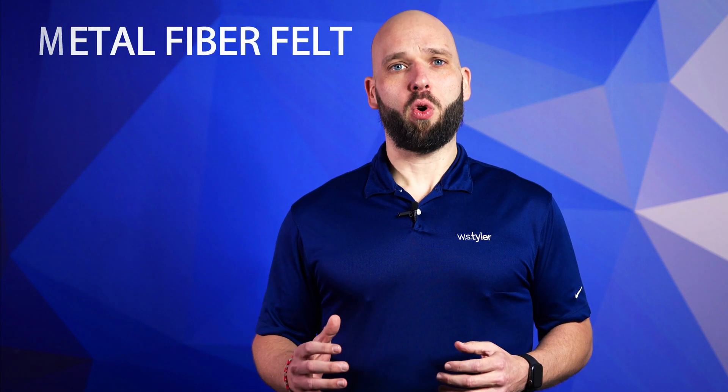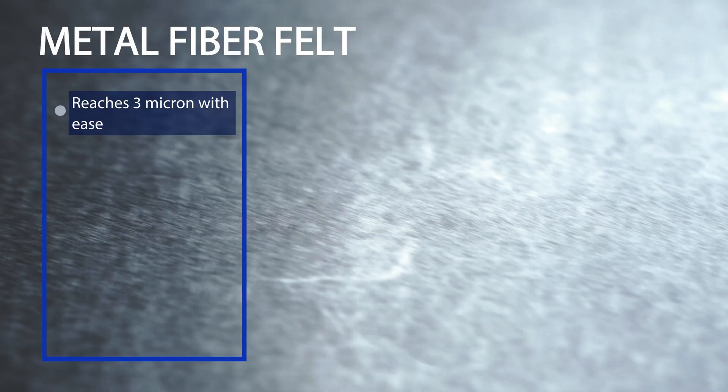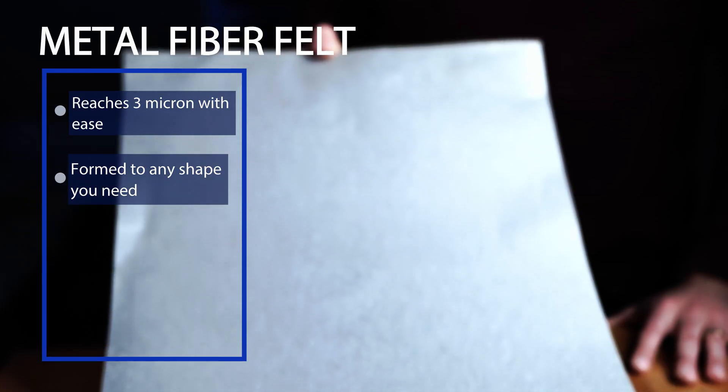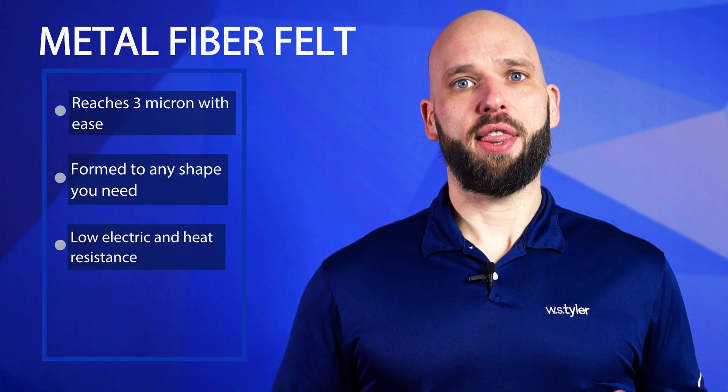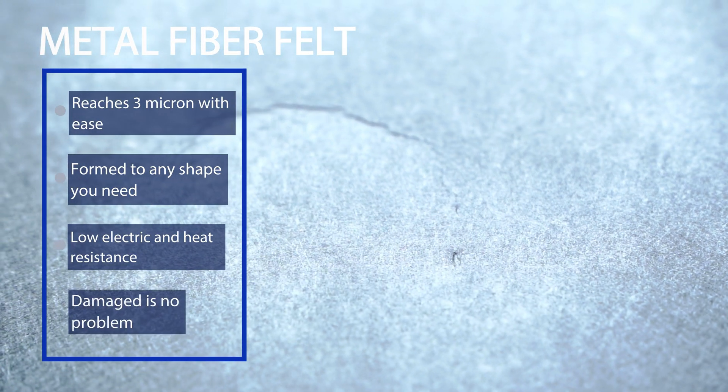One of the biggest advantages of metal fiber felt is that its pore size can reach the very fine size of 3 micron without any sacrifice in performance. Also because of how it's made the fiber felt can also be formed into any shape you need. Metal fiber felt filters also have low electric and heat resistance. This makes them perfect for electrical operations that filter hot materials. And even if it gets damaged the metal fiber felt will always be able to deliver the desirable level of filtration because of its three-dimensional shape.